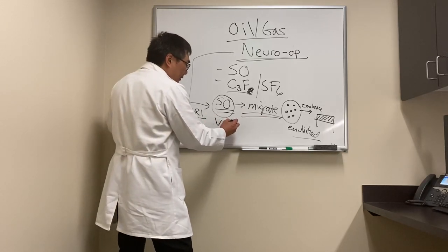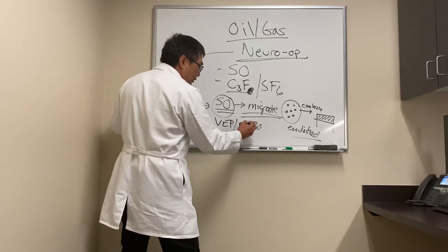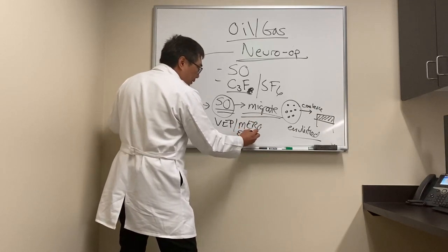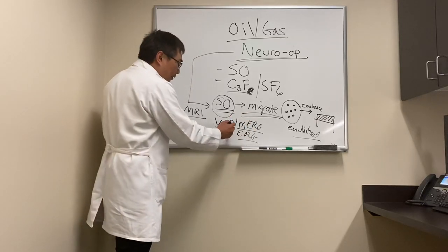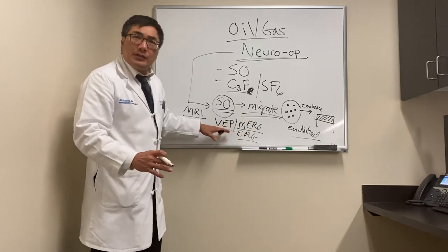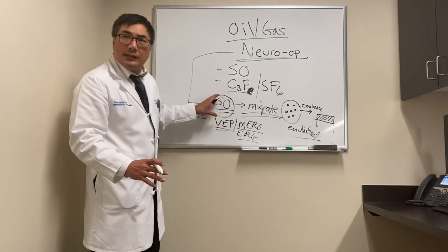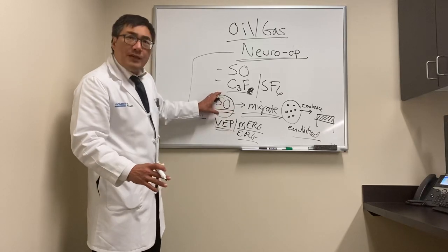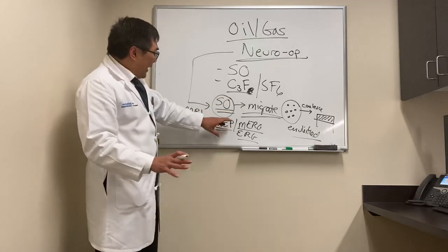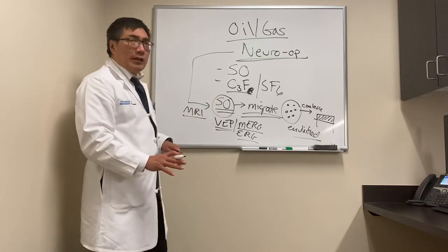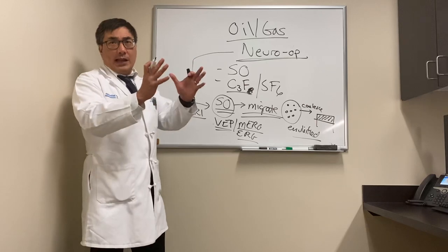If there's no migration on MRI, silicon oil can still affect the electrical signal of the eye. Electrophysiology — ERG, multifocal ERG, visual evoked potentials, and pattern VEPs — can be used to assess retinal and optic nerve function for evidence of toxicity. It doesn't have to be from silicon oil itself; it can also be phototoxicity from the light pipe used during surgery.